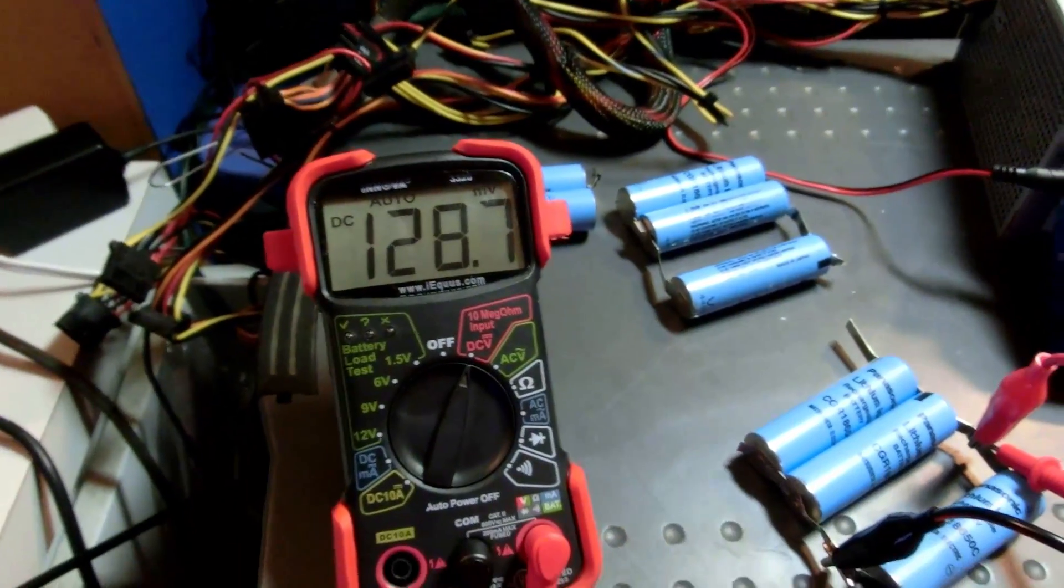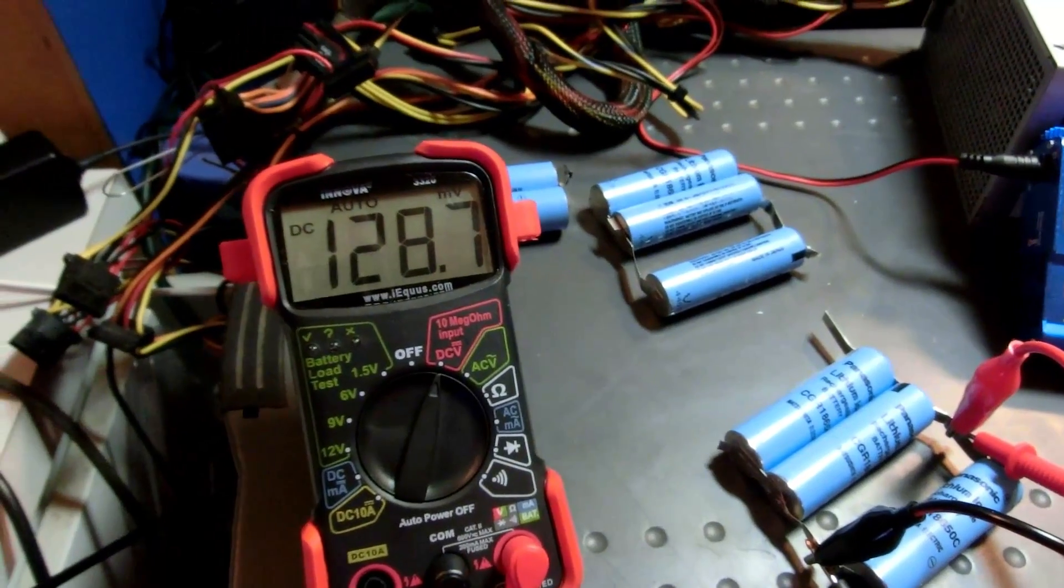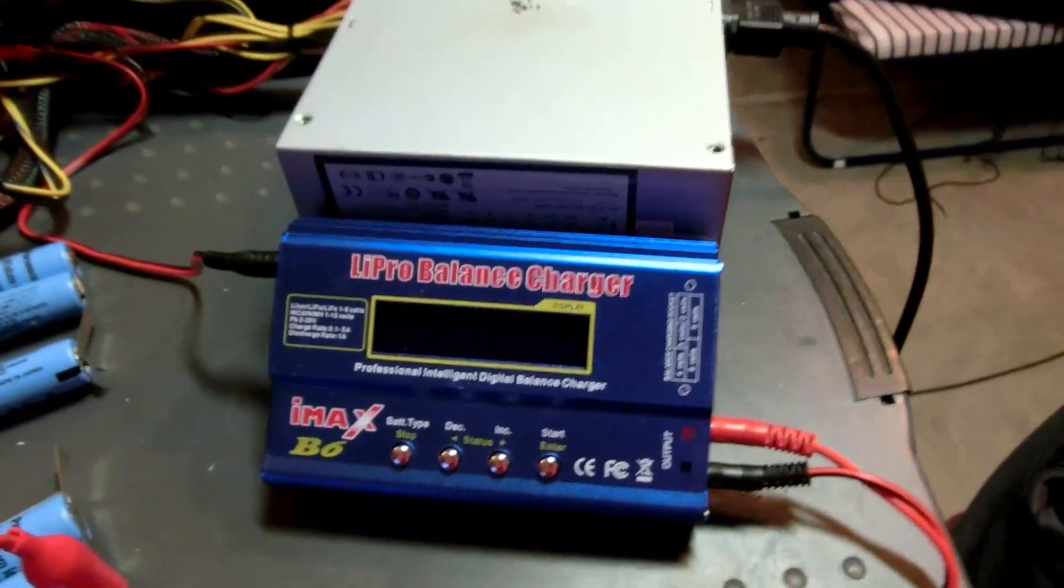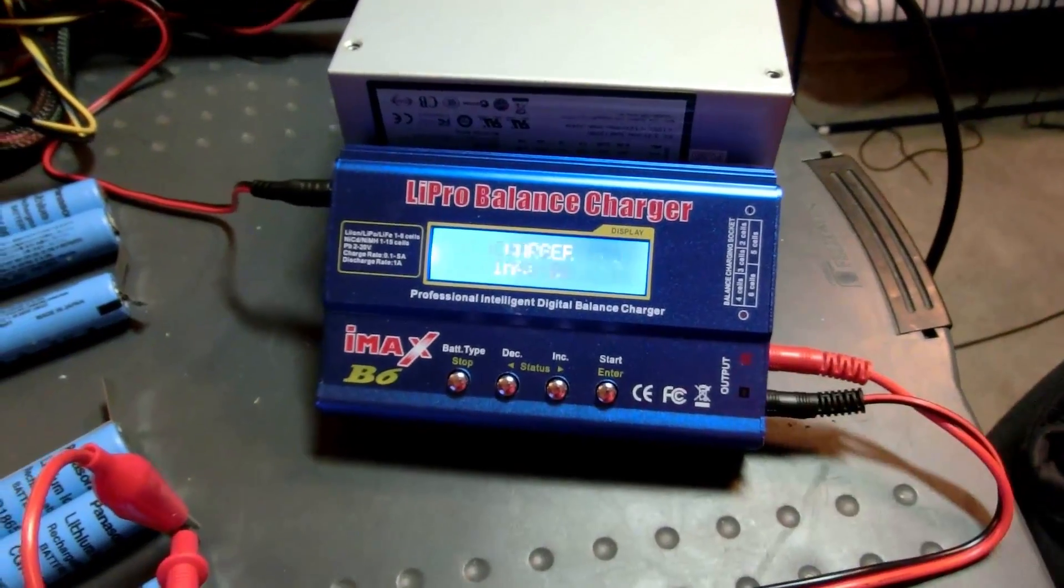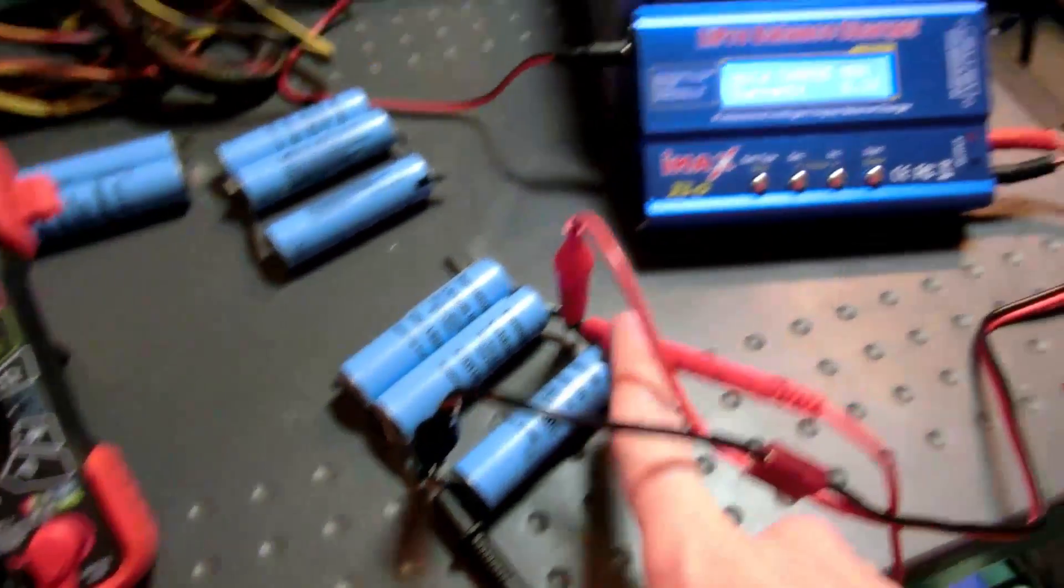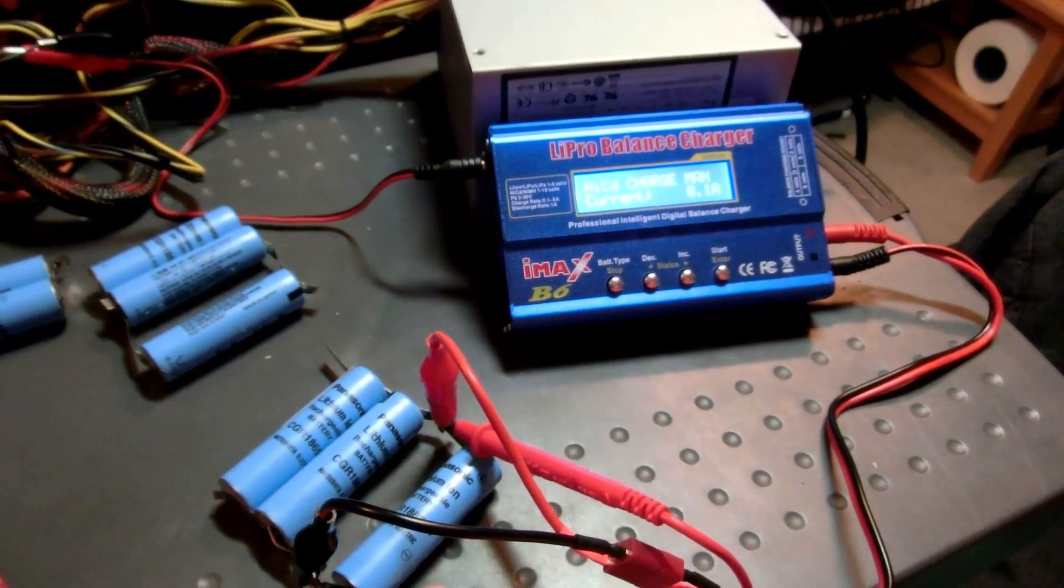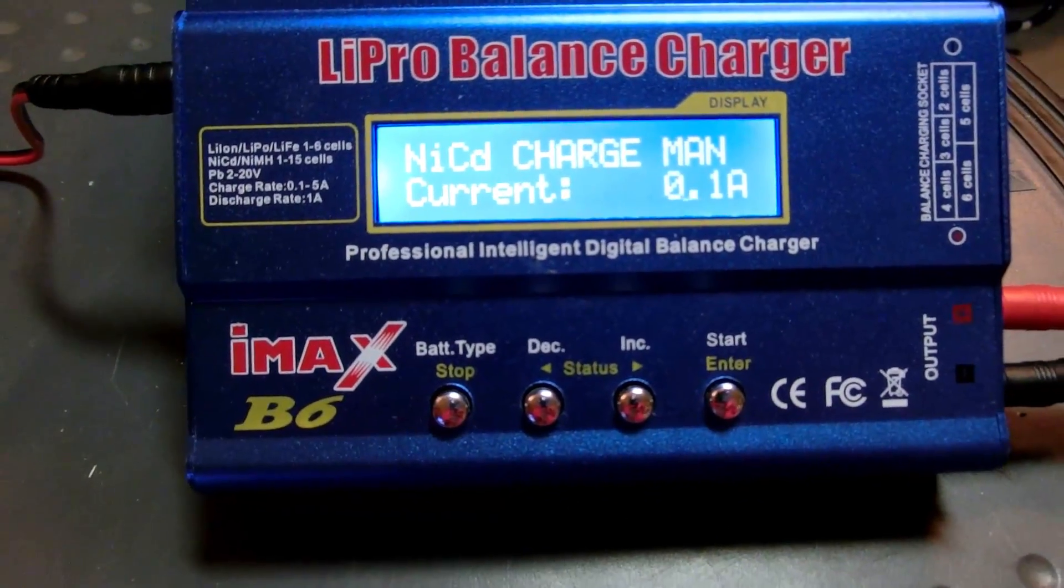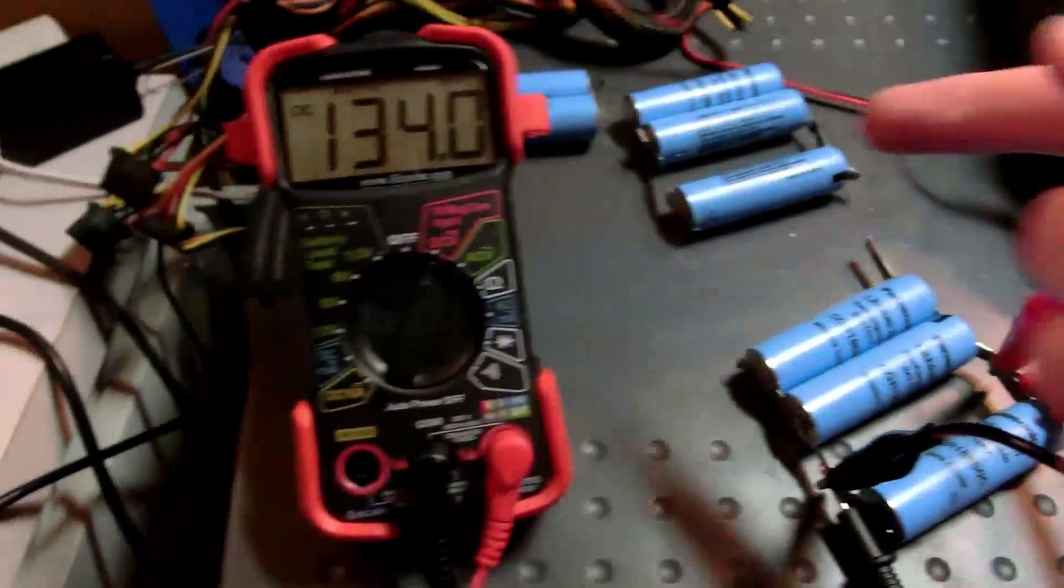So, the first thing we have to do is we have to charge it with a very low amount of current. Turn on our power supply, IMAX B6. Now, the IMAX B6 only goes down to 0.1 of an amp, as you can see right there. And that's only 100 milliamps. That's still a little higher than what I would put into these.